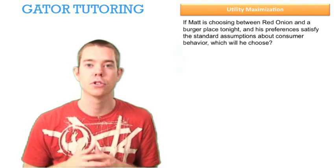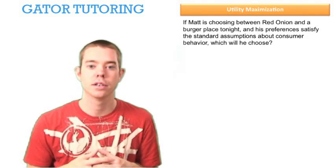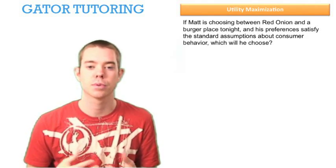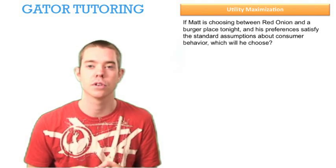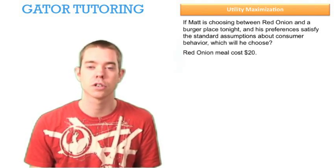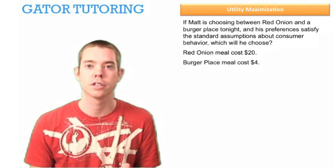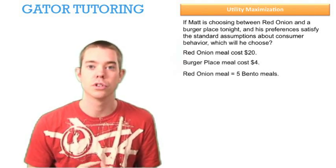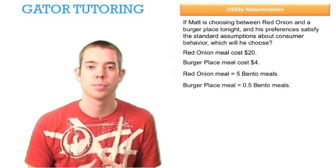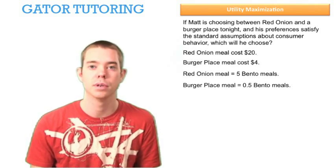This question says: if Matt is choosing between the Red Onion and a Burger Place tonight, and his preferences satisfy the standard assumptions about consumer behavior, which will he choose? We're told that a Red Onion meal costs $20, a Burger Place meal costs $4, a Red Onion meal is just as good as five bento meals, and a Burger Place meal is just as good as 0.5 bento meals.